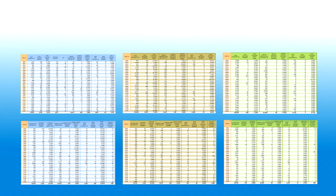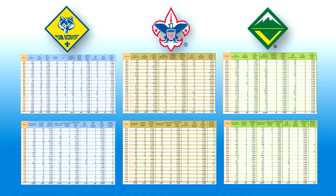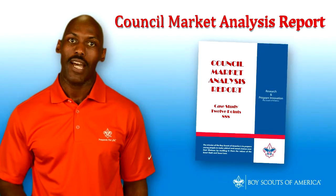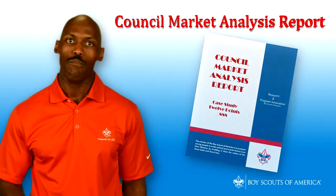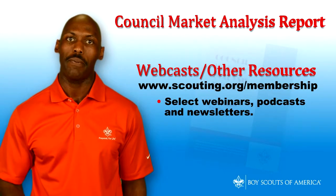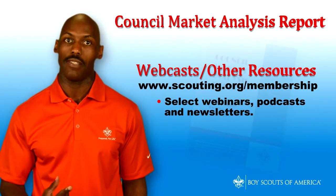Finally, use the three data tables — Cub Scouts, Boy Scouts, and Venturers — to see ethnic data for each zip code. This can help district executives identify pockets of underserved youth. For more information on how to get the most out of your report, watch the webcast on membership planning and analysis.